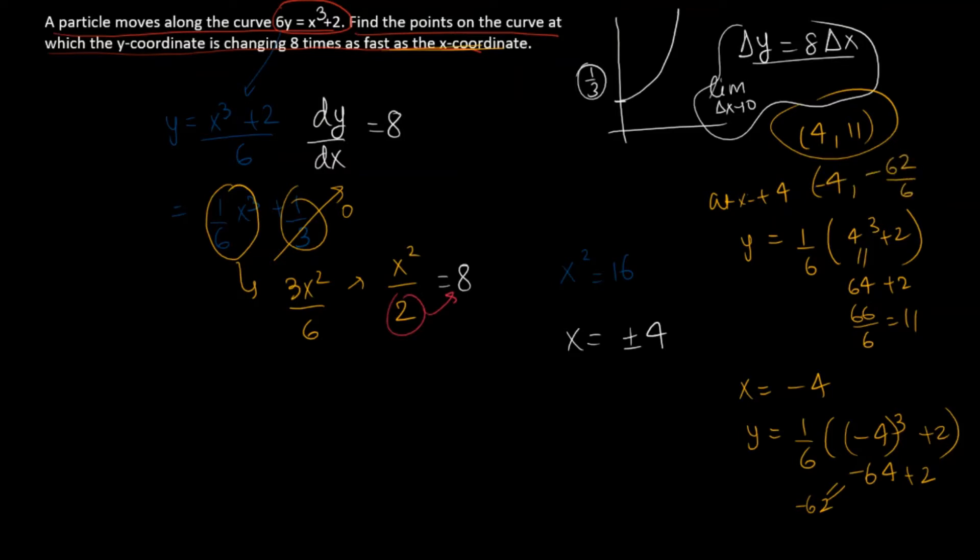We can simplify it, we can write as negative 4, negative 31 over 3. So these two points will be where the condition will satisfy.